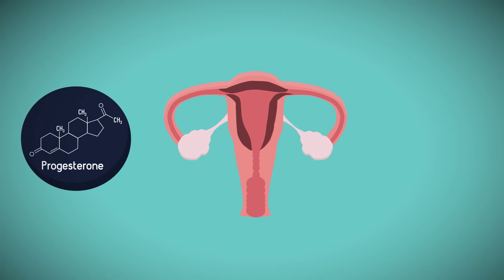Progesterone is another hormone secreted by your ovaries and works to maintain the uterus lining thickened by oestrogen. This continues to occur even during pregnancy, so as to support the growing foetus.